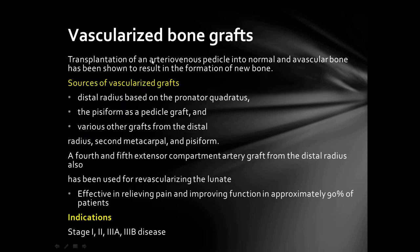Vascularized bone graft: transplantation of an AV pedicle into avascular bone results in formation of new bone. Sources include distal radius based on pronator quadratus as a pedicle graft, second metacarpal graft, and fourth and fifth extensor compartment artery graft from the distal radius. It is effective in relieving pain and improving function in approximately 90% of patients and is indicated in Stage 1, 2, 3A, and 3B disease.